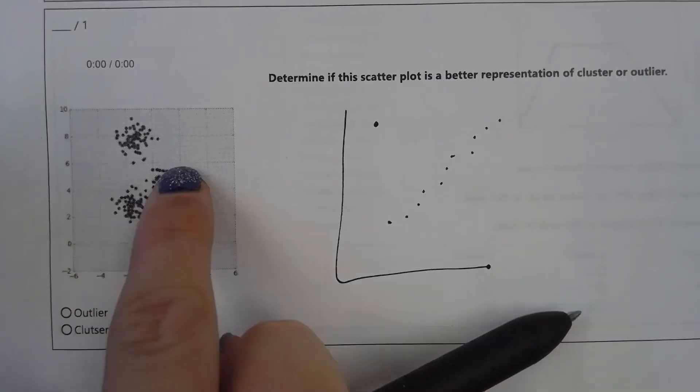Moving on to the next question: determine if this scatter plot is a better representation of cluster or outlier. Notice how all of our ordered pairs are following somewhat of a line; however, there's one point off to the side — that is what we call an outlier. So this graph better represents an outlier.